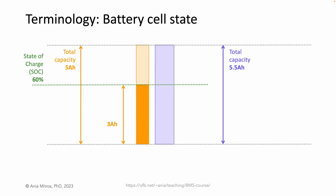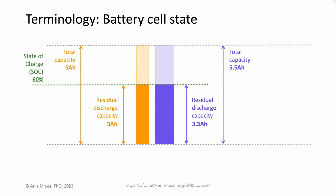Imagine a second cell with slightly larger capacity — 5.5 amp hours. Let's charge that cell to the same state of charge, to 60%. 60% of 5.5 amp hours is 3.3 amp hours. These cells are at the same state of charge, 60%, but they are holding different amounts of charge: 3 amp hours versus 3.3 amp hours. The amount of available charge in a cell is called the residual discharge capacity.